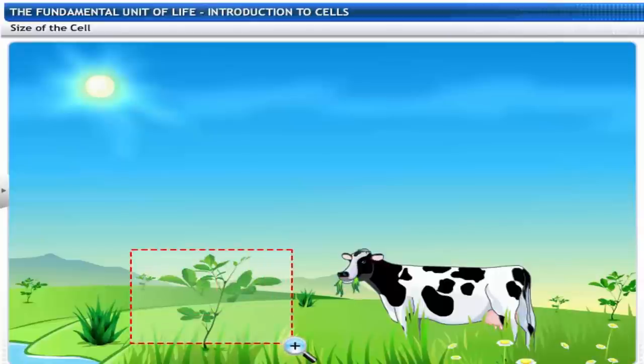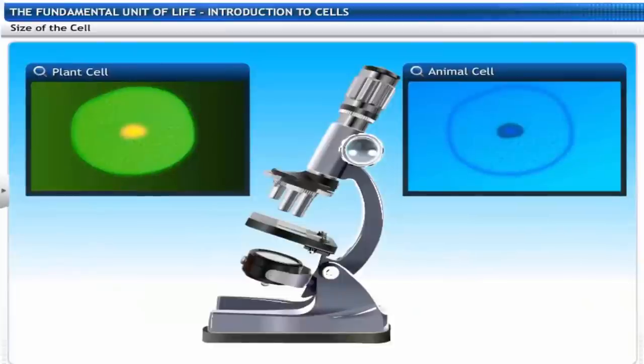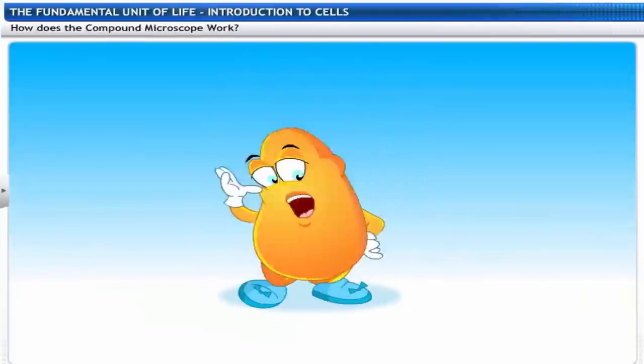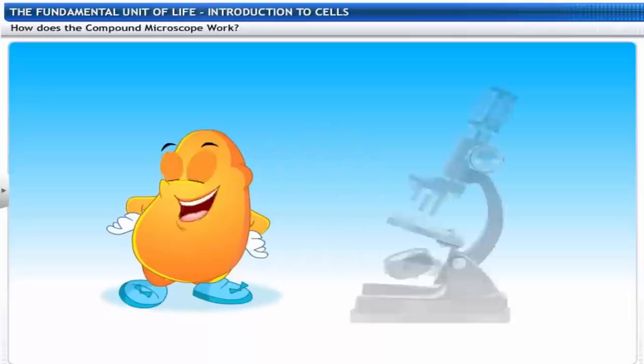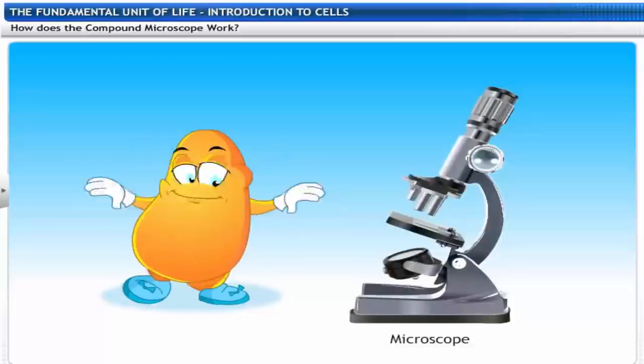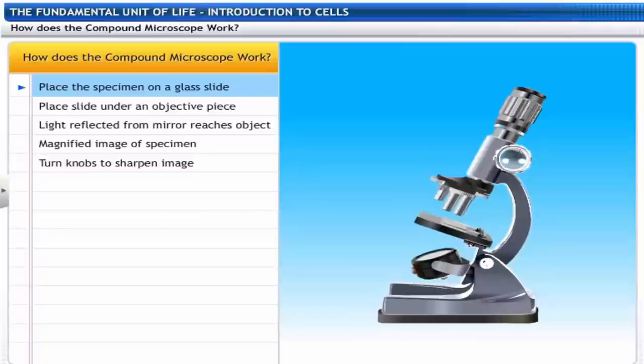Plant and animal cells are too small and visible only under a microscope. So, without the microscope, you would have never known me. That's why I consider the microscope to be one of the greatest inventions of mankind. Let's see how a compound microscope works.